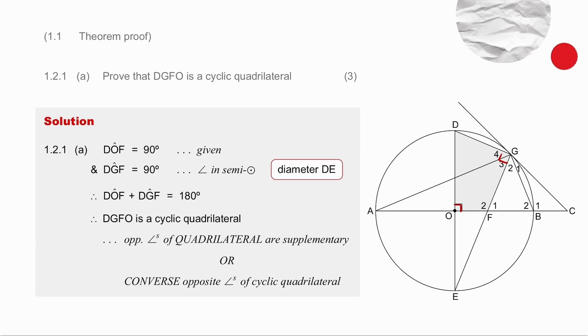Now you need to be very careful. If you want to prove that something is cyclic and you use the word cyclic in your reason, you have to have the word converse with it.